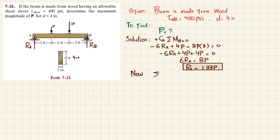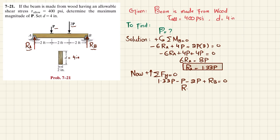Now find R_B using the equilibrium condition that the sum of all forces along the y-direction equals zero, with upward forces positive. We have: R_A plus R_B minus P minus 2P equals zero. Substituting R_A equals 1.33P: 1.33P minus P minus 2P plus R_B equals zero. From here, R_B equals 1.67P.